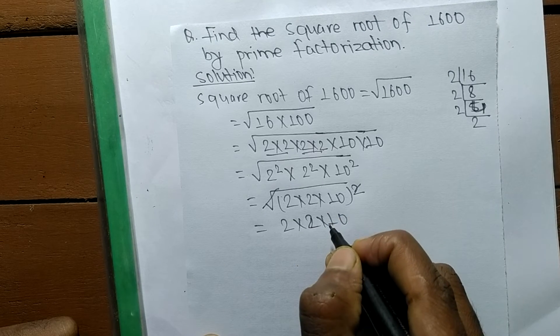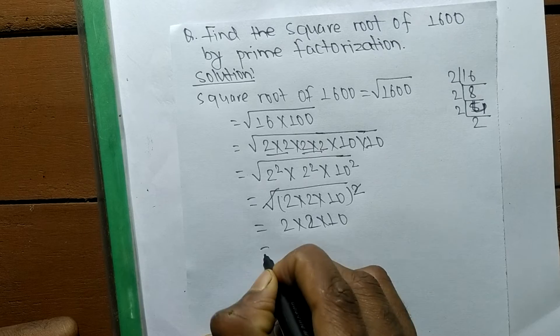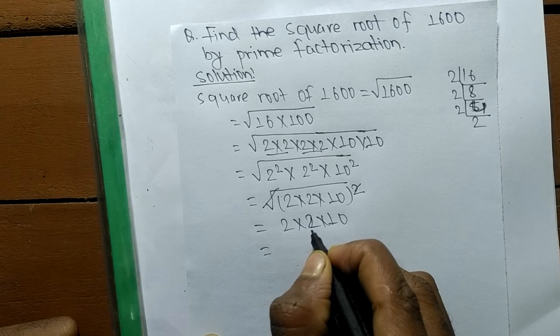These numbers come out of the square root. It is 2 times 2 means 4, and 4 times 10 means 40.